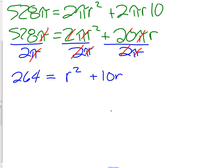It's quite a bit simpler now, but we still have a quadratic. We know it's a quadratic because of the r². We're going to rewrite this in standard form: r² + 10r - 264 = 0. That's a quadratic equation in standard form.